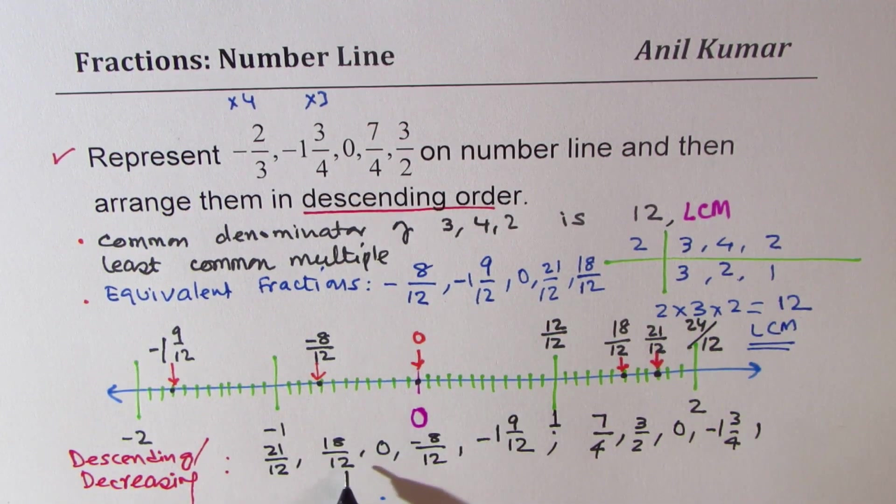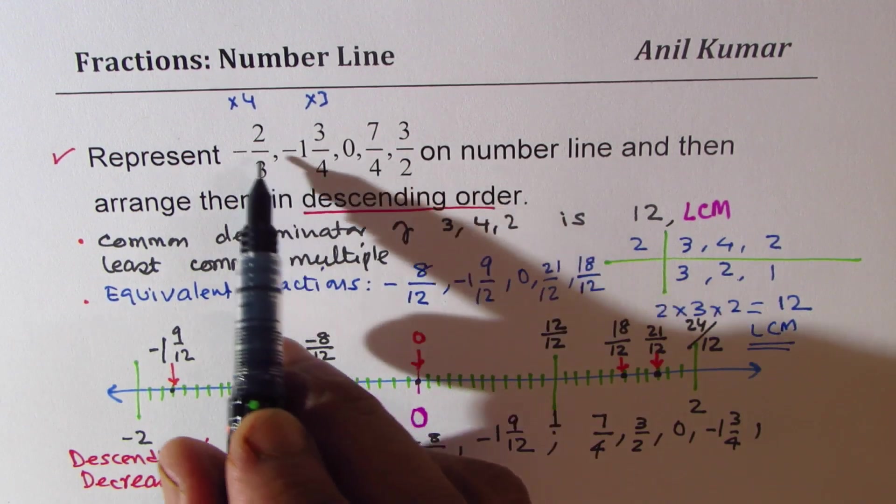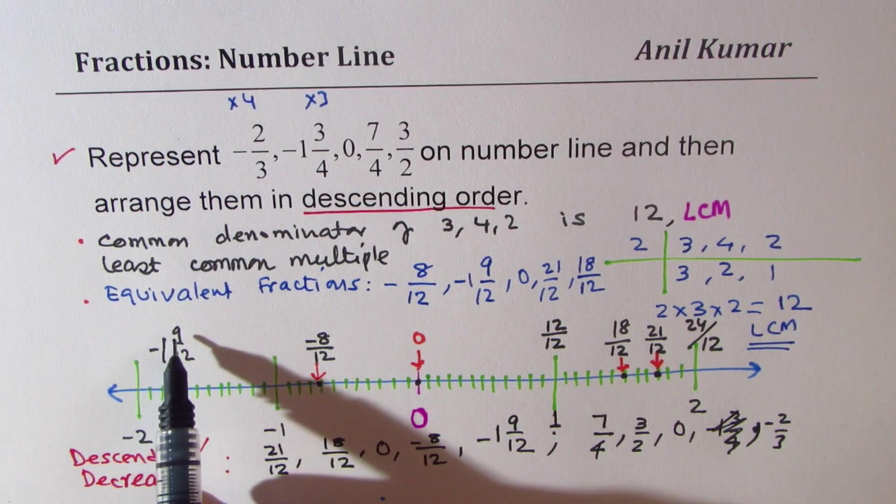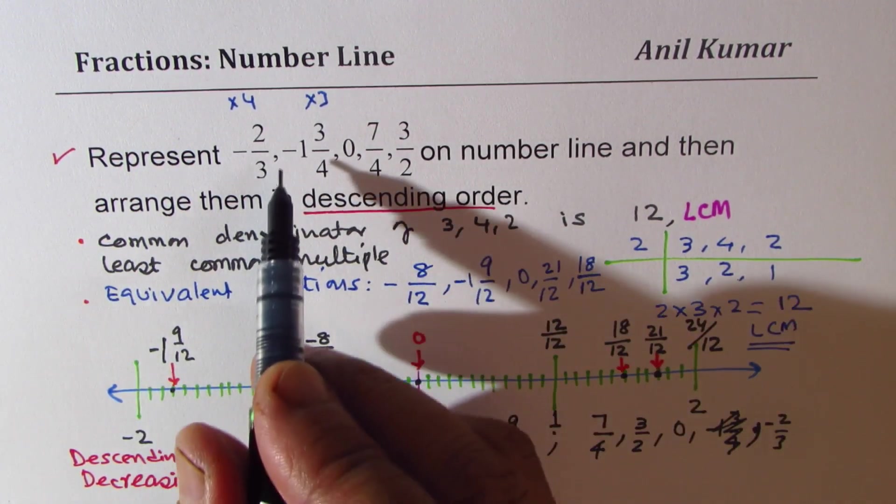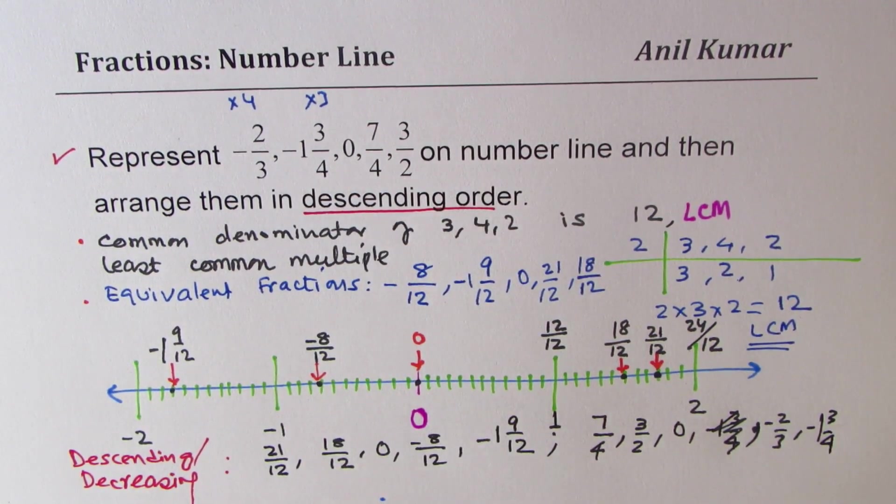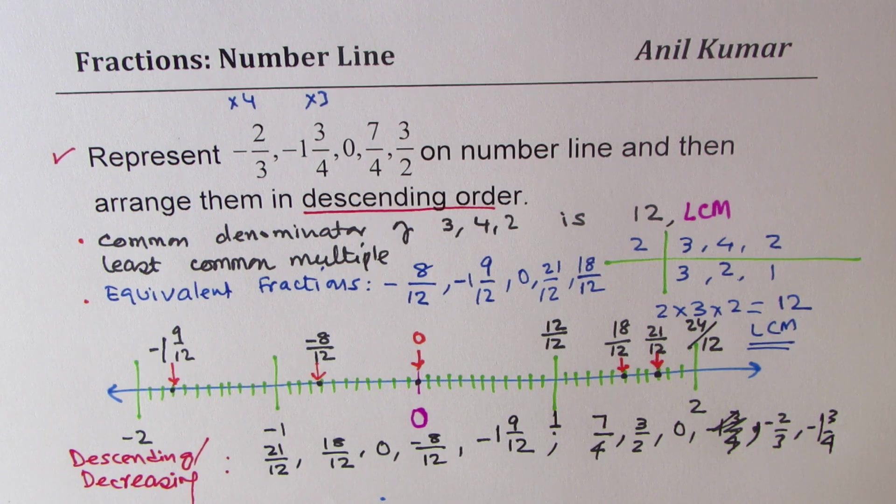I'm sorry, this was the last number. We have -8/12, which is -2/3. So -2/3. And the least number here is -1 9/12, which is same as -1 3/4. So that is how you could actually write it in decreasing order. So I hope the steps are absolutely clear.